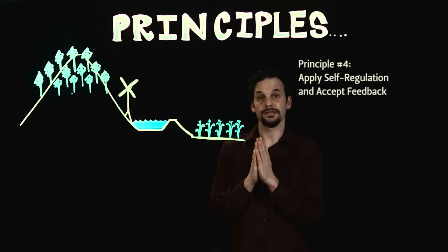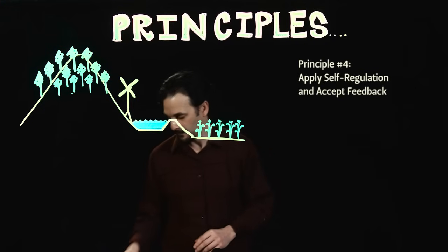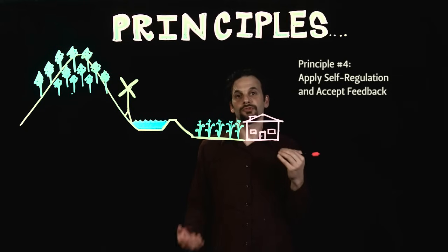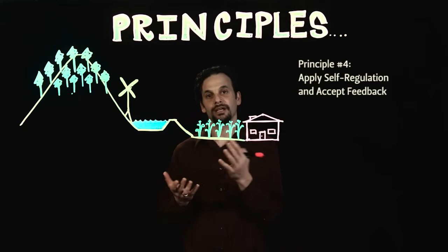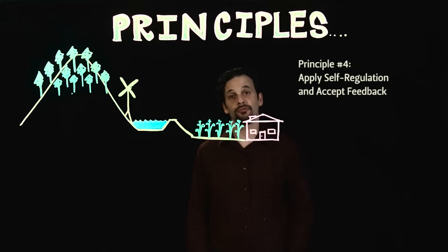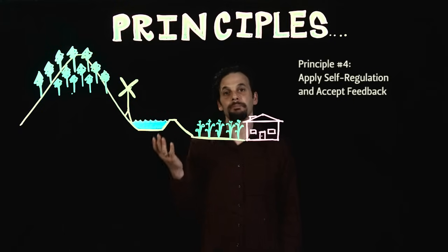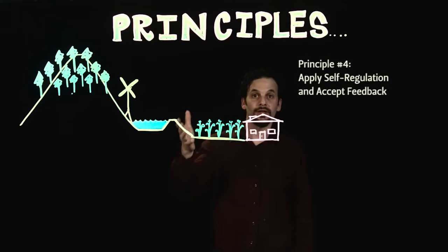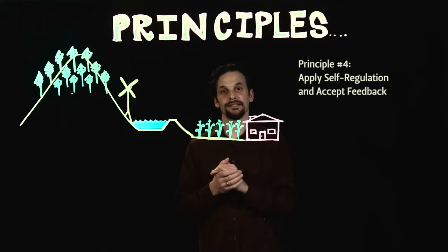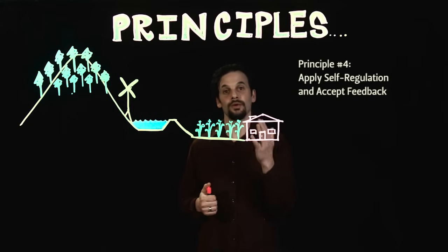Principle 4 is Apply Self-Regulation and Accept Feedback. This principle directs us to live simply and consciously, and to limit our own consumption, because no one else is going to do that for us. We need to keep our own consumption and emissions in check, as that is our responsibility when we care for earth and care for people. Accepting feedback means that learning from our successes and mistakes is an imperative, and should lead to better choices as we learn what works and what doesn't.